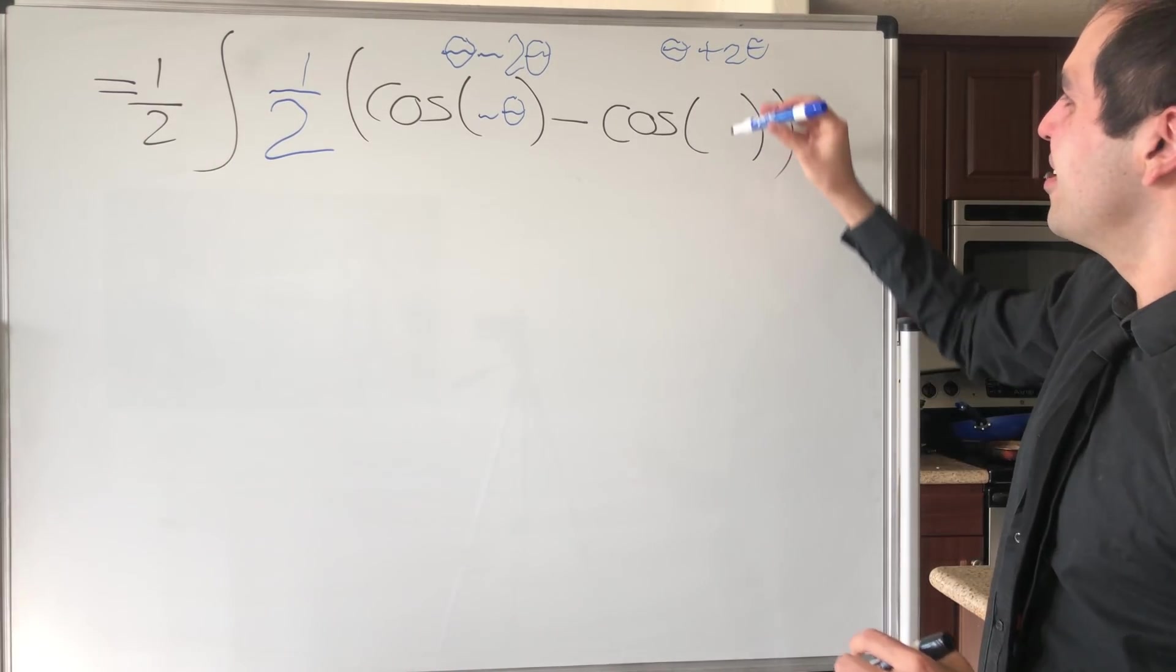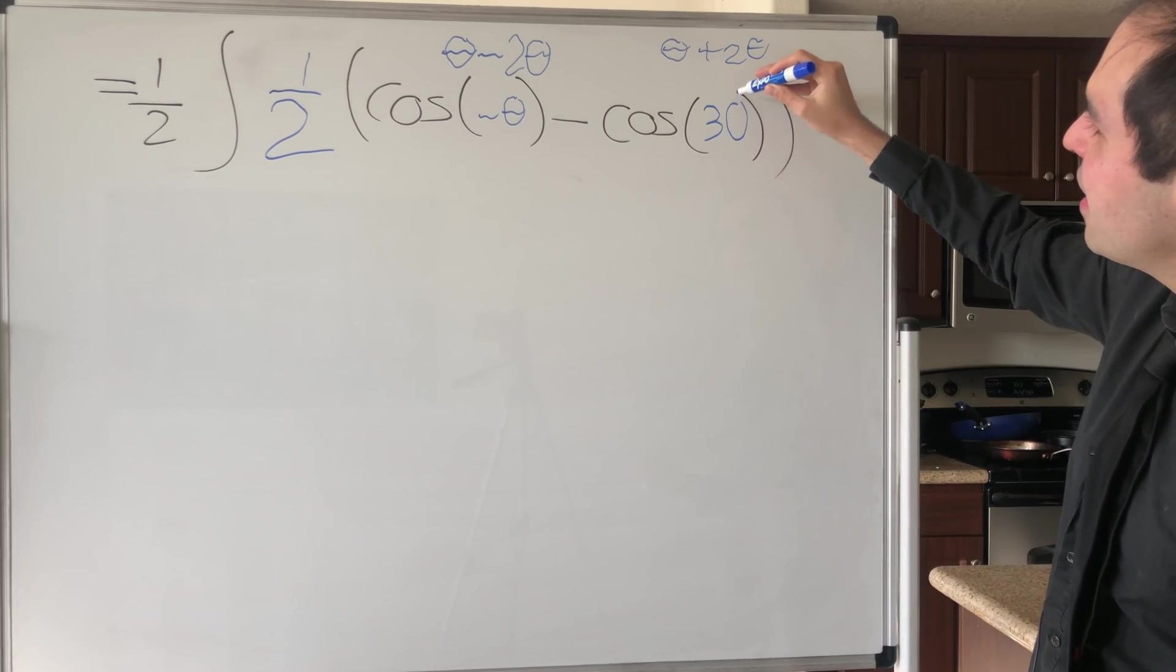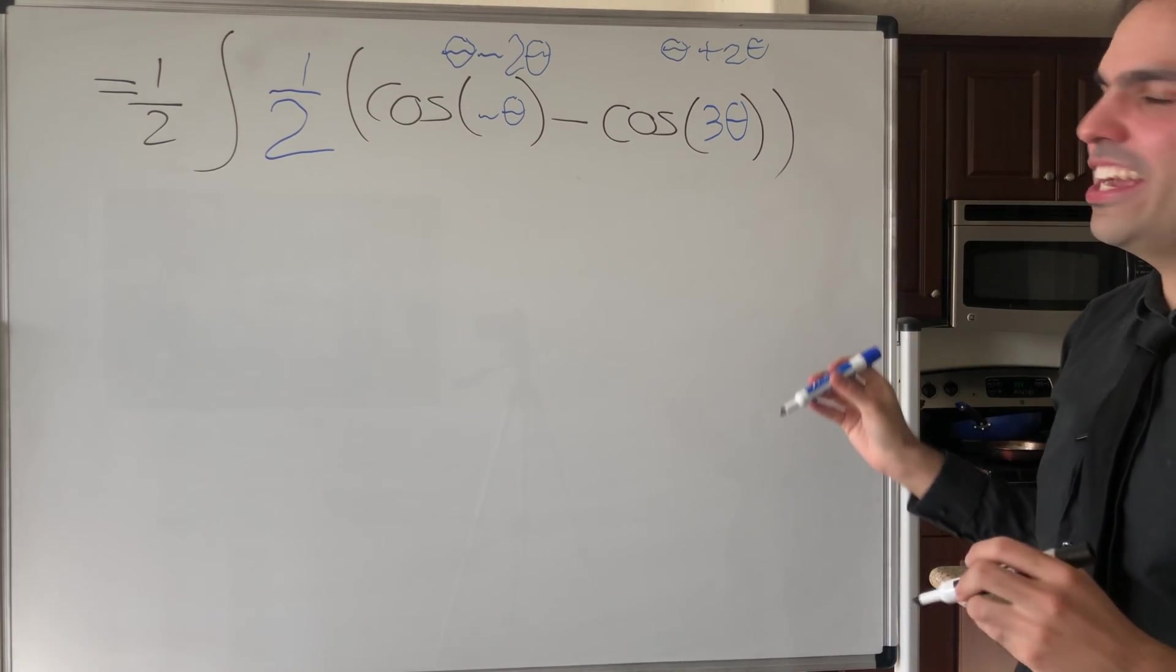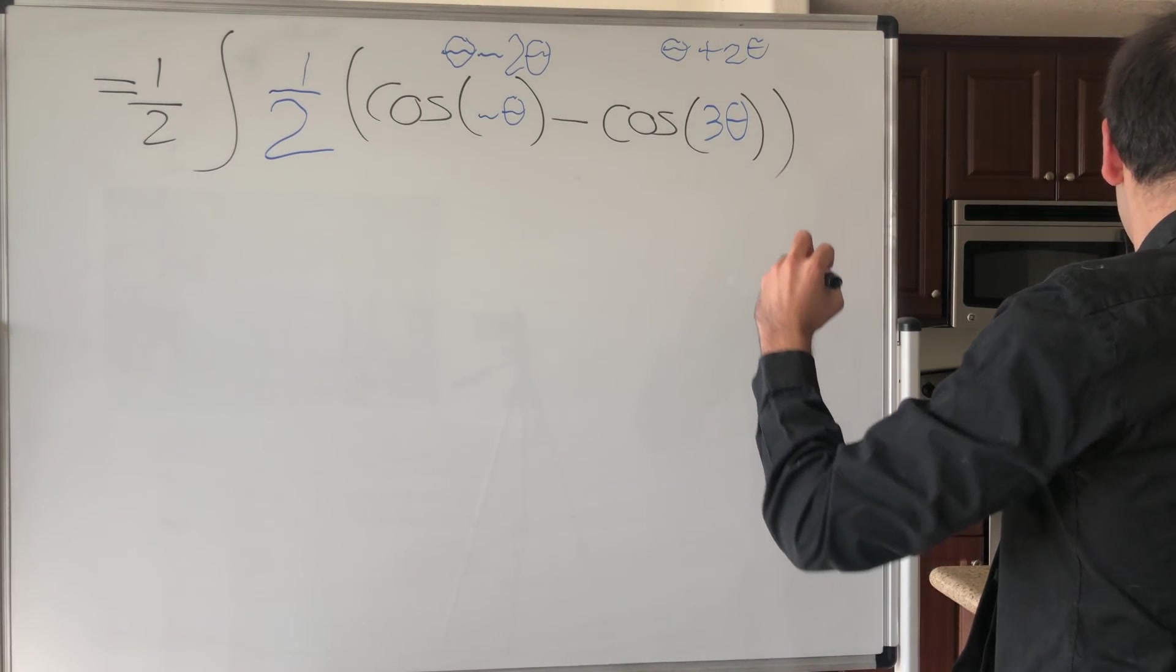So theta plus two theta, good. And that is cosine of three theta. I don't know how right-handed people survive, but somehow they do. And then d theta.